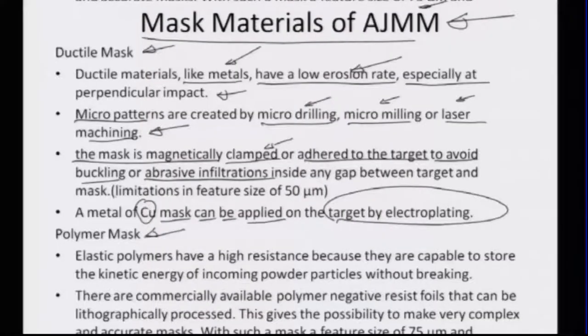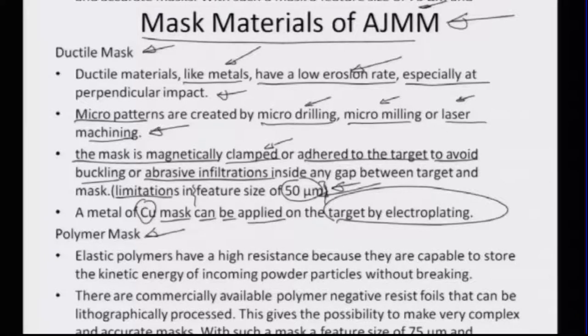The limitation of this kind of machining is that it can be done over feature sizes of 50 microns or more — going below 50 microns is a very challenging task when using abrasive jet micro machining. Metals have the advantage that the mask does not corrode easily in comparison to other materials used for mask making, such as brittle polymers.